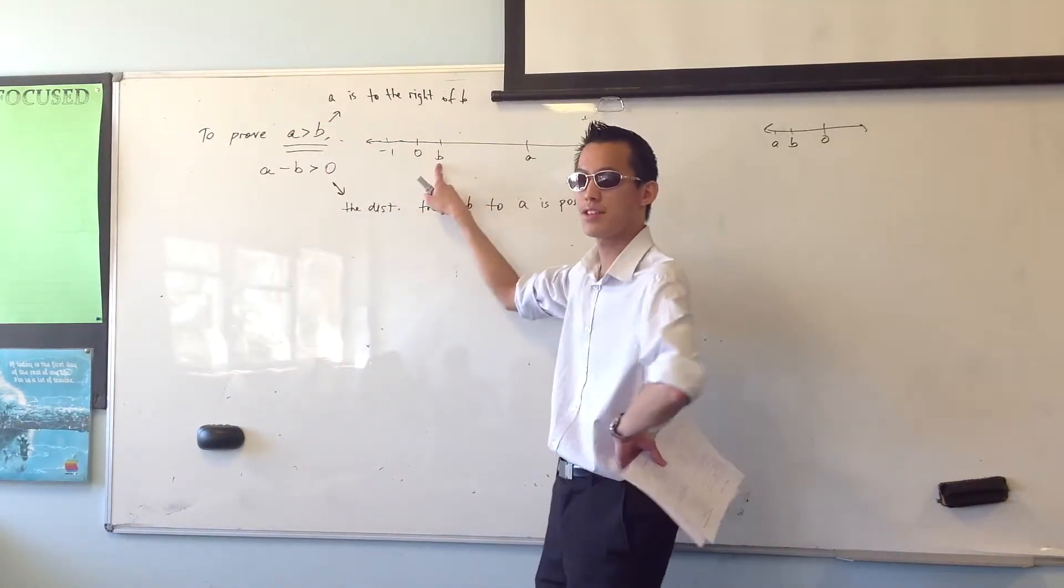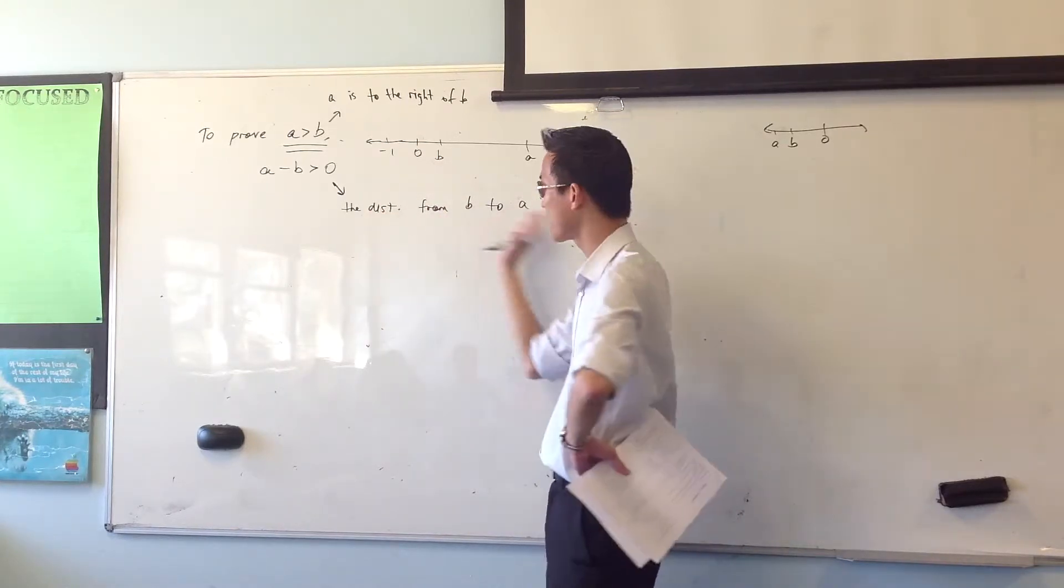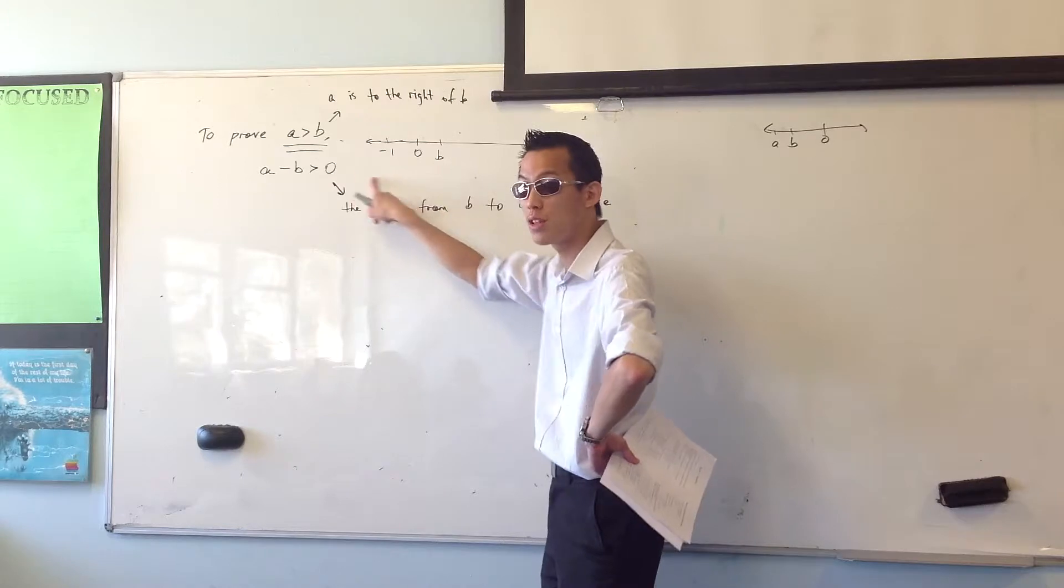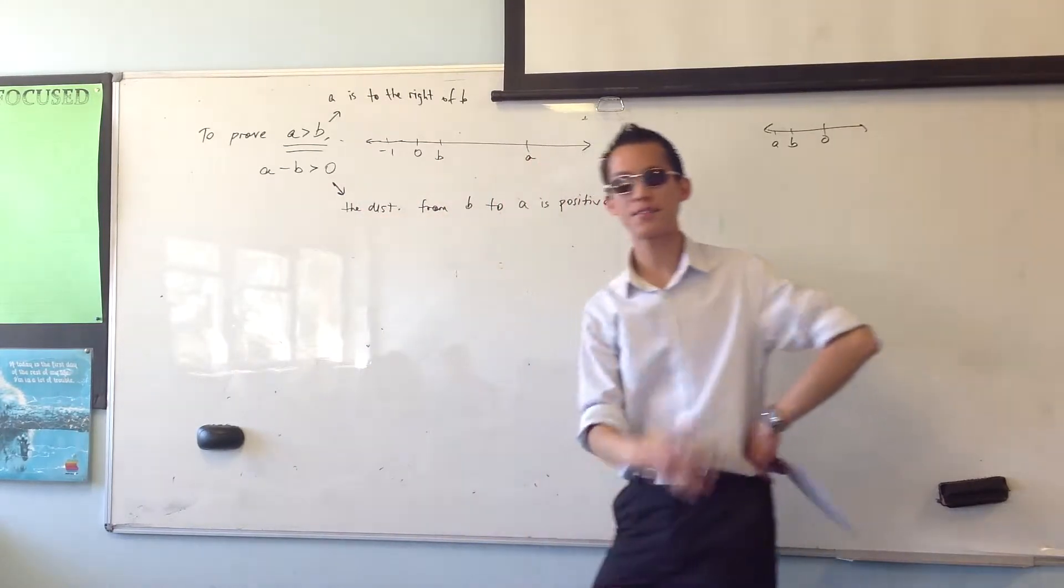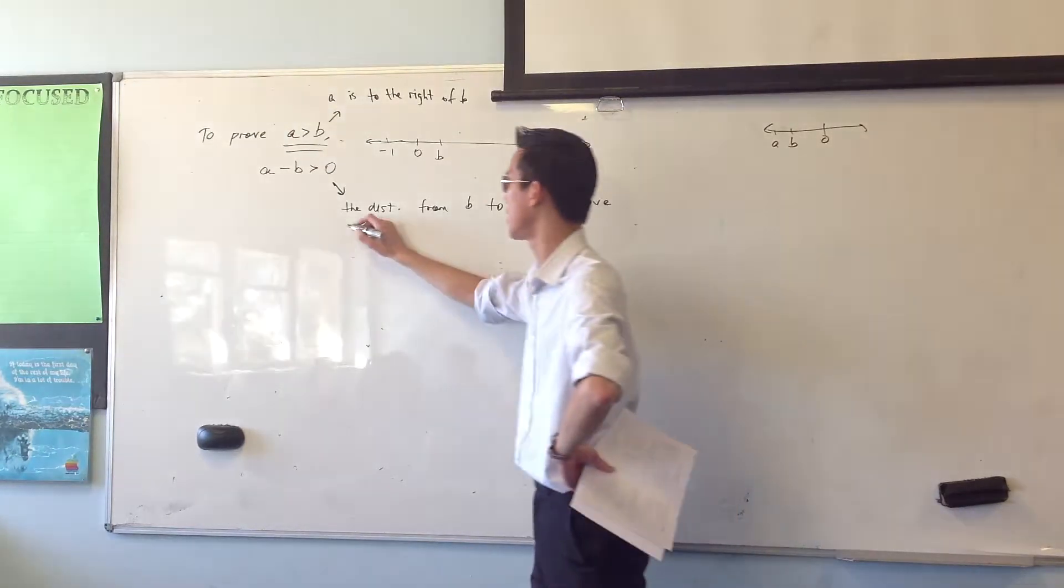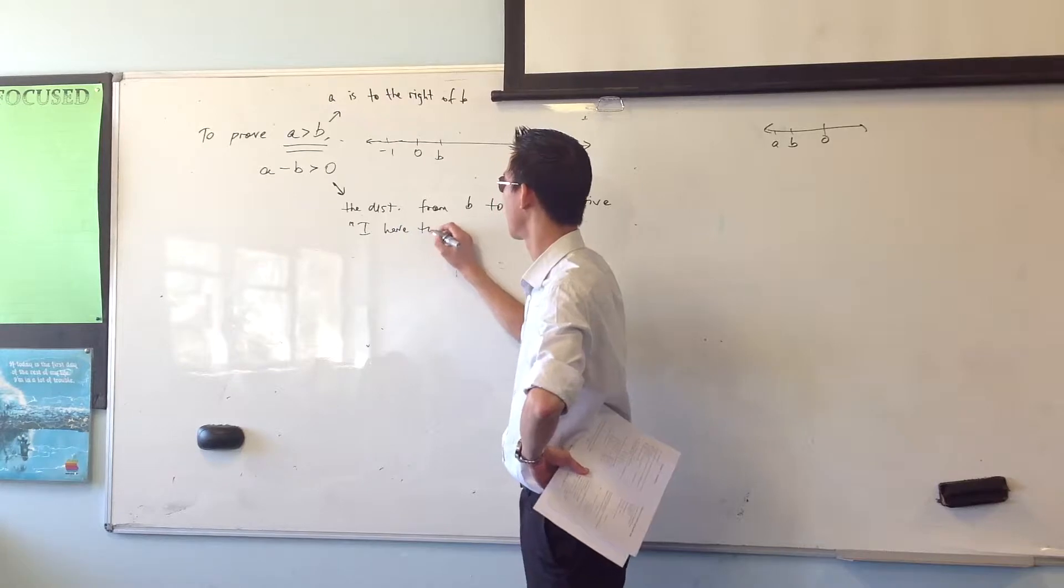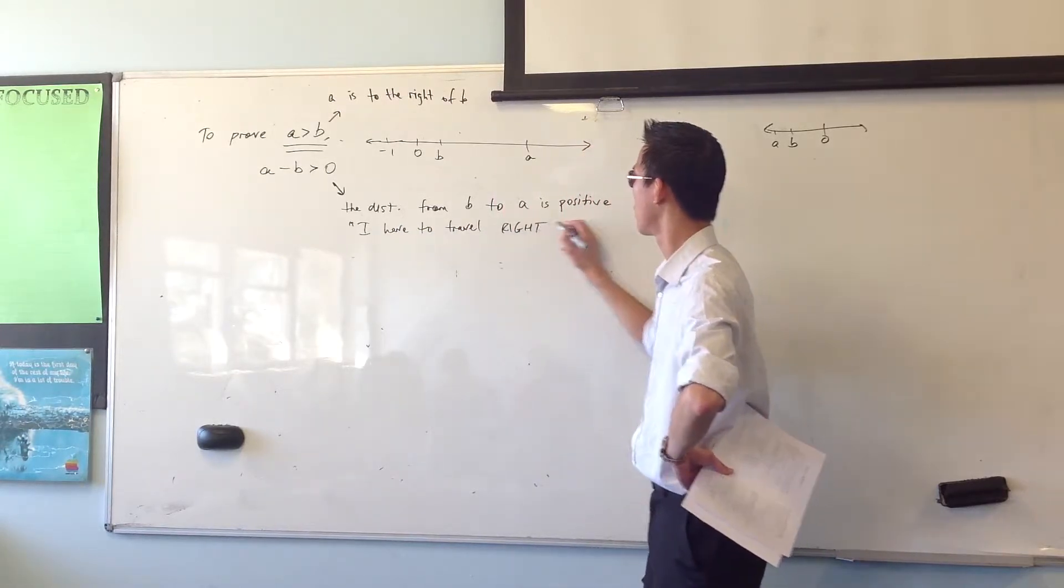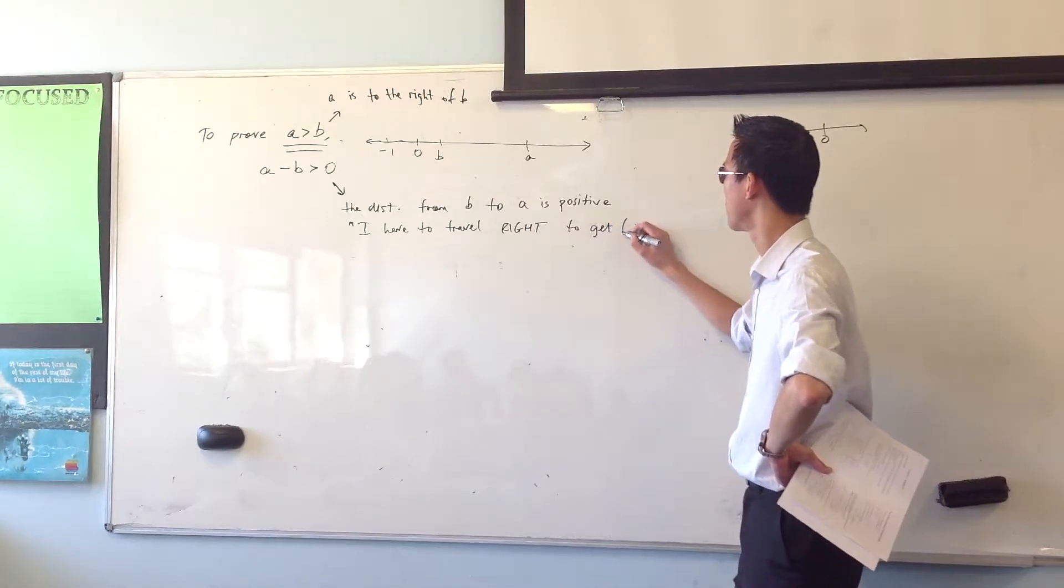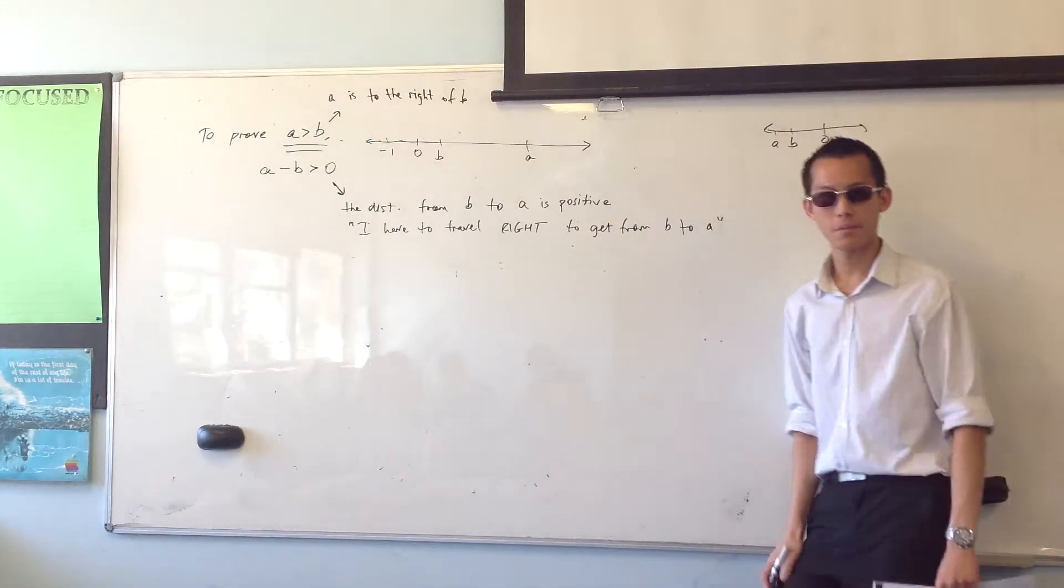If I have to go from b to, say, minus one. That's an absolute value. Okay? Now, see, I'm trying to get in terms of left and right here, right? I'm going to the left. Right? Or I could say, I have to travel right. I have to travel to the right to get from b to a. Okay? Are you happy with that?